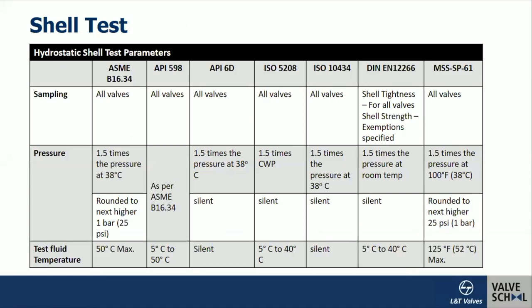Coming specifically to two important tests we were discussing — hydrostatic shell test. All the standards talk about the quantum of check; each valve has to undergo this test. The pressure is arrived at basically with a calculation of 1.5 times your cold working pressure. If you really look at ASME B16.34, for a given class rating and material at room temperature, you can select the rated pressure. If you multiply it by 1.5 times, you get the test pressure for conducting the shell test. Whatever the test media we are using, the test fluid temperature also plays a role. The standard also talks about what are the temperature limitations of the test fluid.